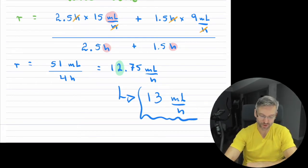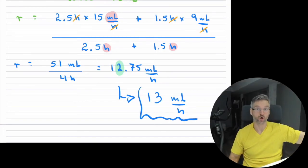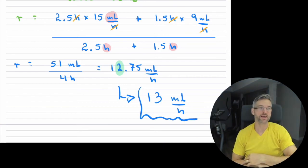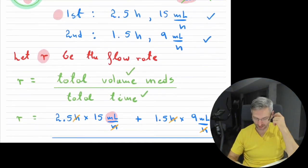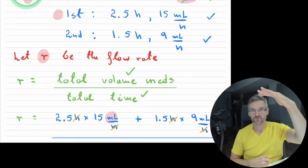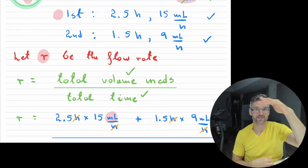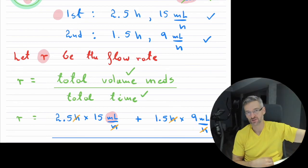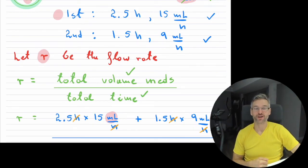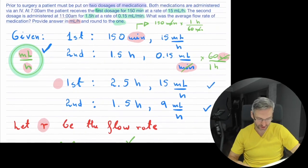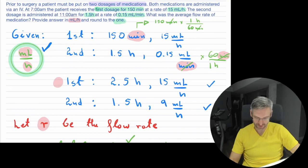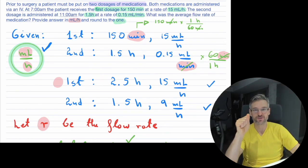When setting these up, always remember that averages are some total on top divided by total at the bottom. For medication flow rates, it's total volume divided by total time. Another variant is total mass divided by total time, since sometimes meds are given in mass. Don't forget that 60 minutes equals one hour so you can convert for consistency when needed.